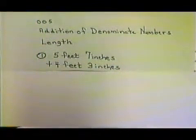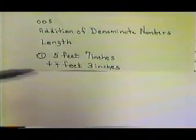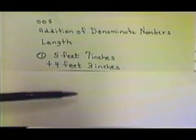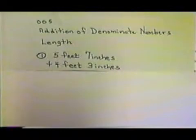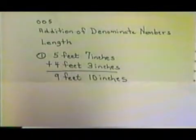We'd like to begin by adding denominate numbers. First of all, we're going to add some denominate numbers that involve length. We'll add 5 feet, 7 inches, 4 feet, 3 inches. So, all we have to do is add our like units together. We add our 3 and 7 and get 10 inches, and add our 4 and 5 and get 9 feet. So, our answer is 9 feet, 10 inches.